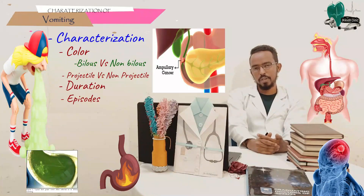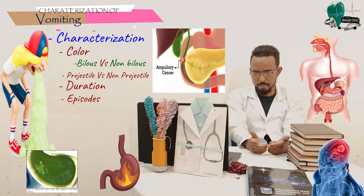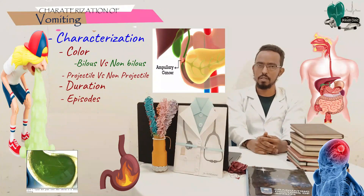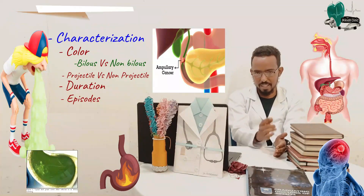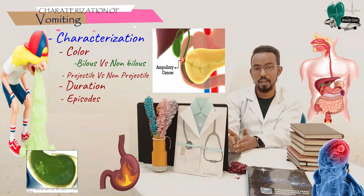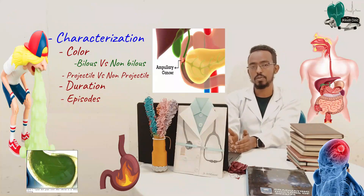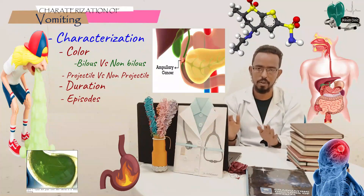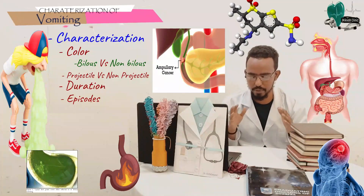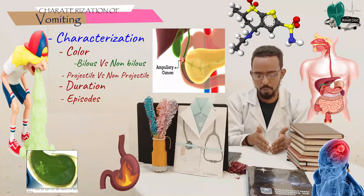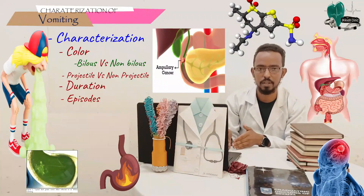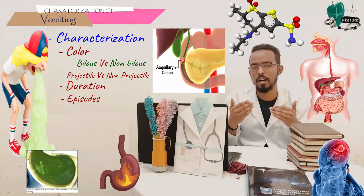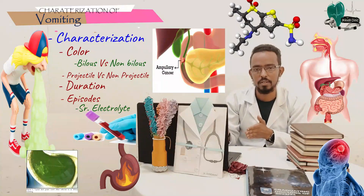The other thing we need to know is the number of episodes of vomiting the patient is encountering, because this helps us anticipate complications. A patient with a single episode differs from a patient with 10 episodes — the latter is at risk of electrolyte disturbance, which is associated with problems in different body systems. For that reason, we have to know the number of episodes so we can anticipate complications and decide whether to check serum electrolytes.